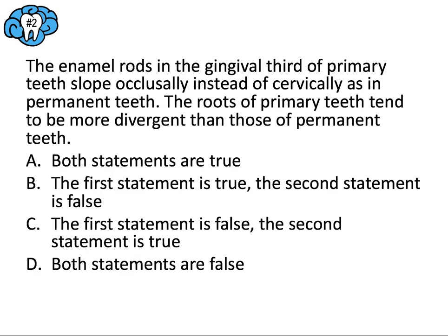Question number two: the enamel rods in the gingival third of primary teeth slope occlusally instead of cervically as in permanent teeth. The roots of primary teeth tend to be more divergent than those of permanent teeth. This question tests primary tooth anatomy. The enamel rods do slope occlusally in primary teeth — different from permanent teeth — and the roots also tend to be more divergent. Both statements are true, so the correct answer is A.